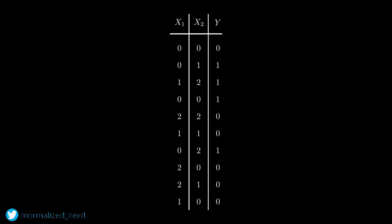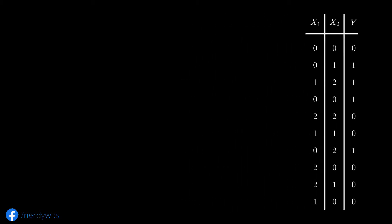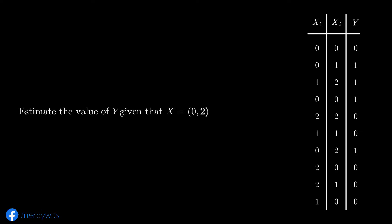Let's consider this small dataset. We have two features, x1 and x2, and the label variable is y. x1 and x2 can take values from 0, 1, or 2 — both are categorical variables. y can take two values, 0 or 1, so it's binary classification. Now imagine someone is asking us to estimate the value of y given that x equals (0, 2), meaning x1 is 0 and x2 is 2, and they want us to find the correct label for that set of features.